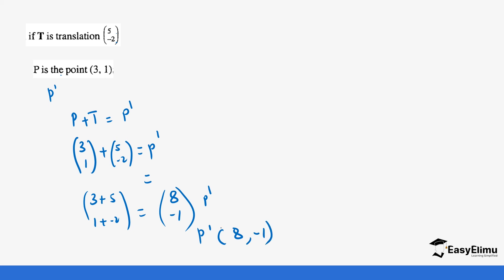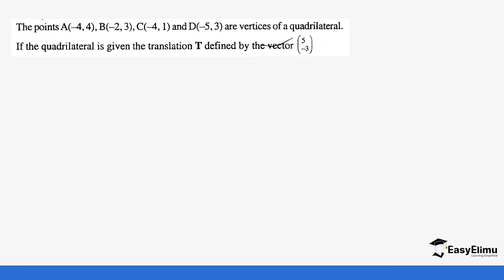Let's do a few more examples. Points A, B, C, and D are vertices of a quadrilateral. If the quadrilateral is given the translation T defined by vector (5, negative 3), find the image — that is, A prime, B prime, C prime, and D prime.